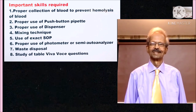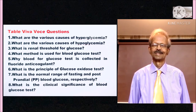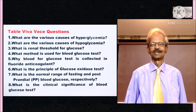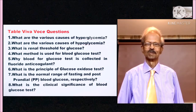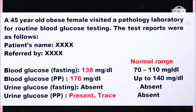You also have to study the table viva questions which will be used for examination purposes. A biochemistry test report is prepared as shown. This is a blood and urine glucose test report of a 45-year-old male patient. Comparing the test values with normal range, you will understand that both fasting and postprandial values are increased moderately.